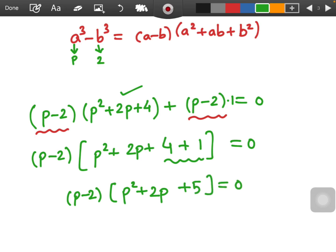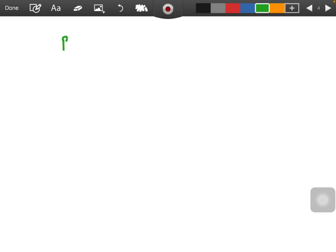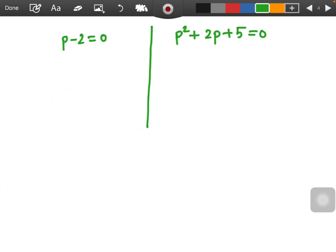In this equation we can see that 2 bracket product is equals to 0. So yes we can equate them individually as 0. So 1 will be p minus 2 equals to 0 and other we are going to have p square plus 2p plus 5 equals to 0. You can check here it is the same we are just equating them separately with 0.